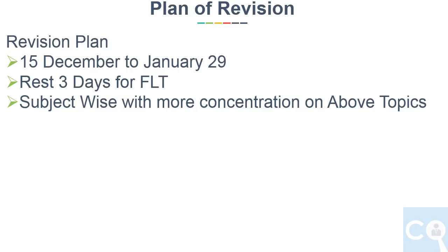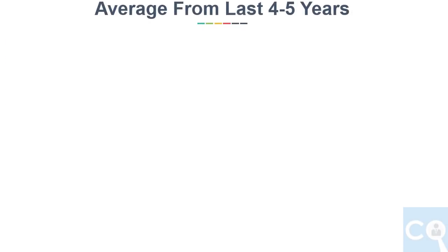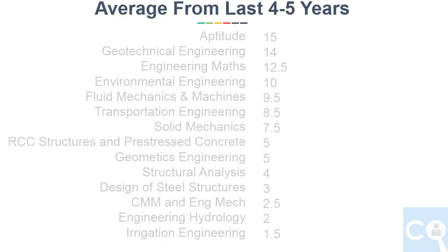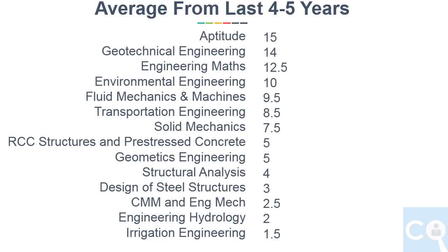The number of days for each subject is based on overall weightage. For the sequence of subjects, let's analyze the last 4 to 5 years' total average marks in each subject including maths and aptitude, arranged from highest to lowest. This gives us the sequence of subjects. We will leave aptitude from the plan because you should practice aptitude daily based on your comfort limit.